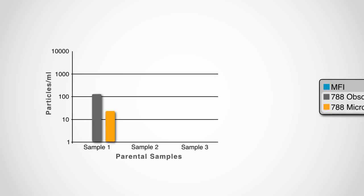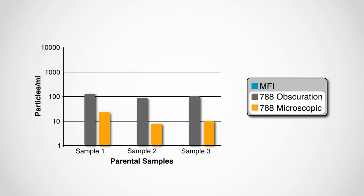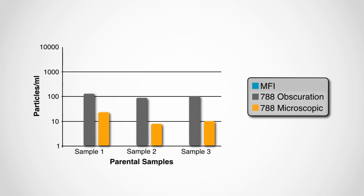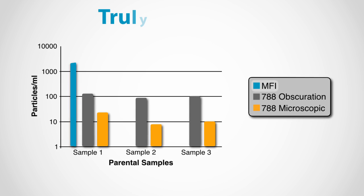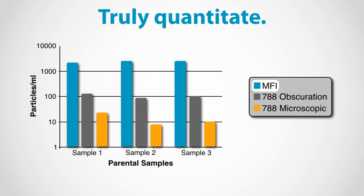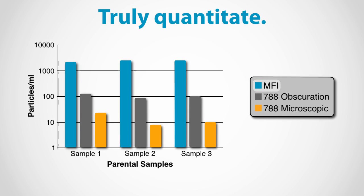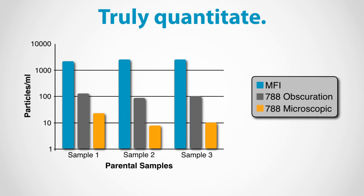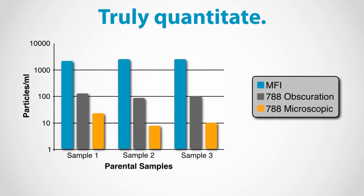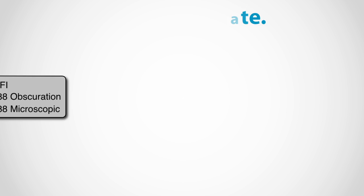Traditionally, light obscuration has been the method of choice, but it can give you false information. MFI gives you accurate quantitation of translucent protein particles, so you can get a clear understanding of your protein formulation.